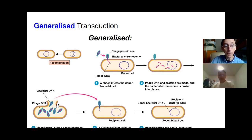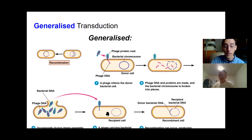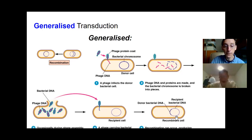When this virus infects a new cell, it does the same thing — binds to the cell and injects its DNA. But this DNA is not viral DNA; it is DNA from part of the chromosome of the original host cell. That DNA can then recombine into the recipient cell's DNA, and the recipient cell can express new genes that came from the original cell. That's how viruses move DNA from one cell to another.